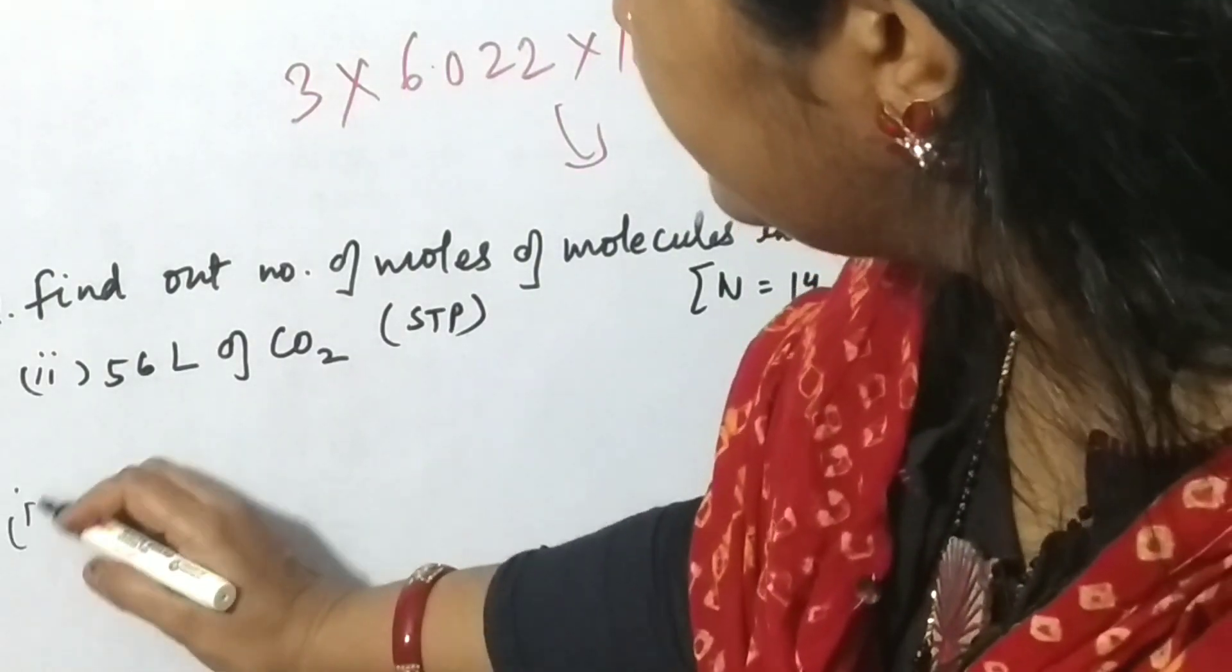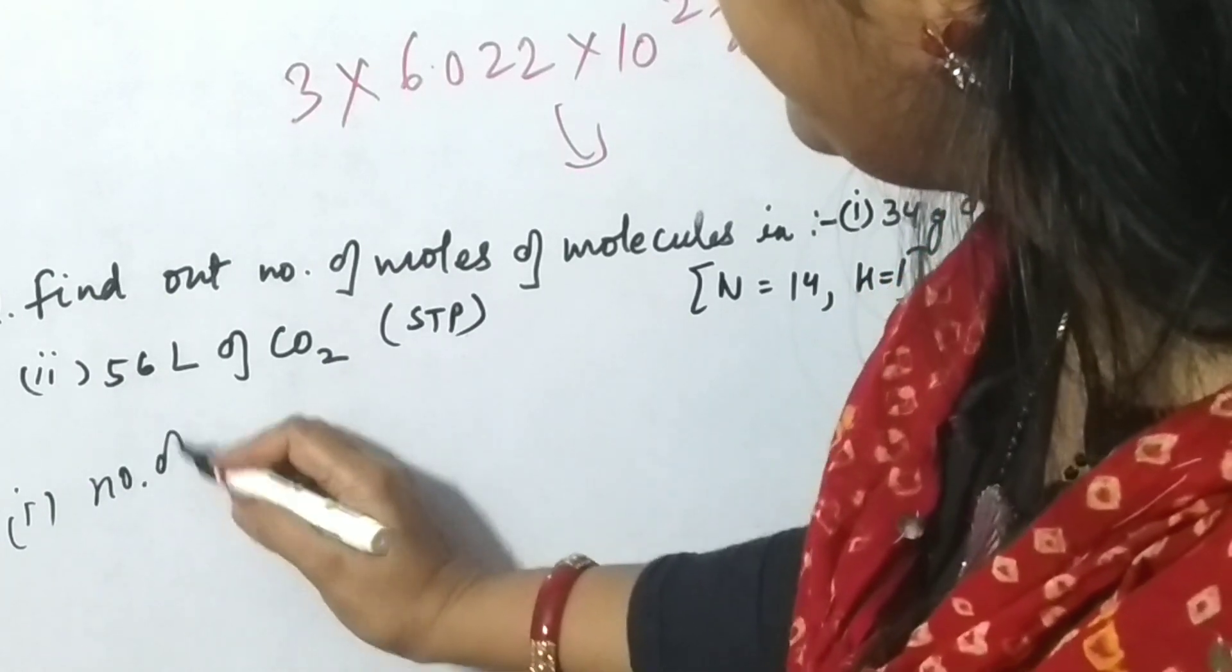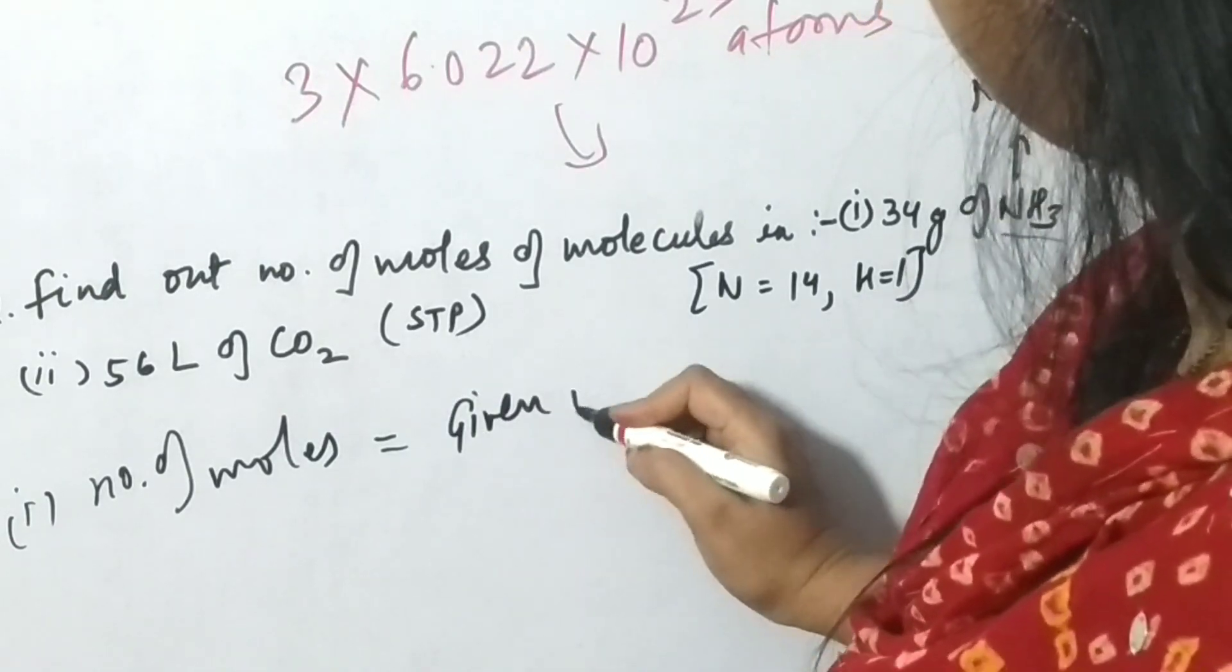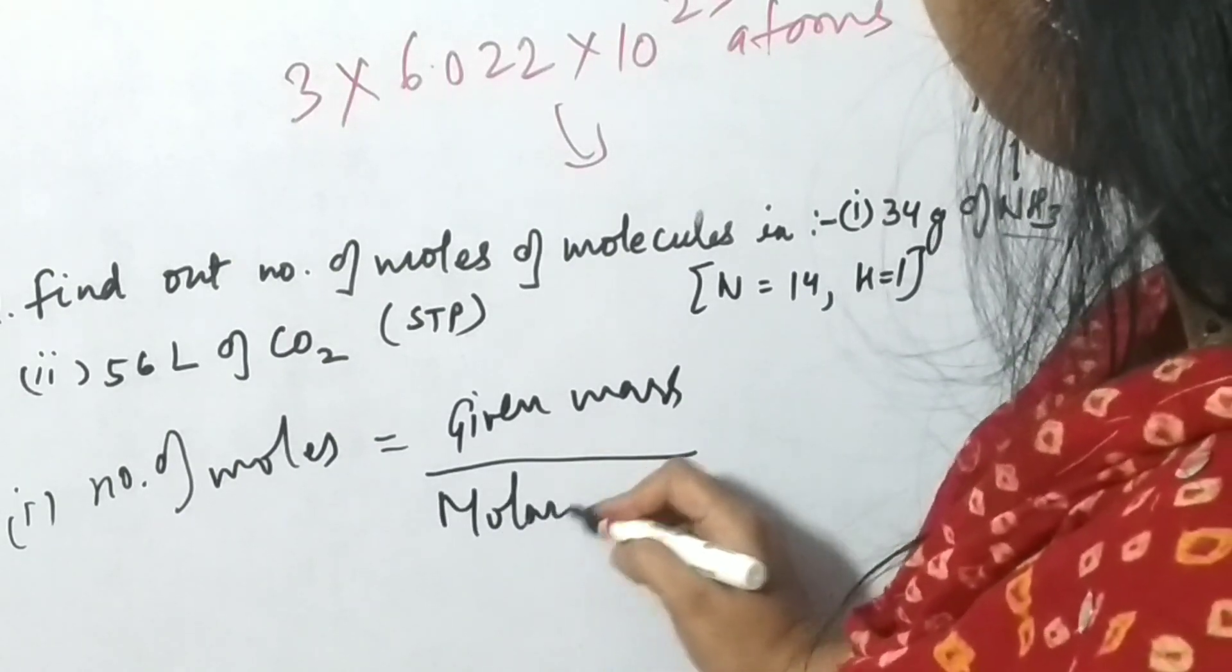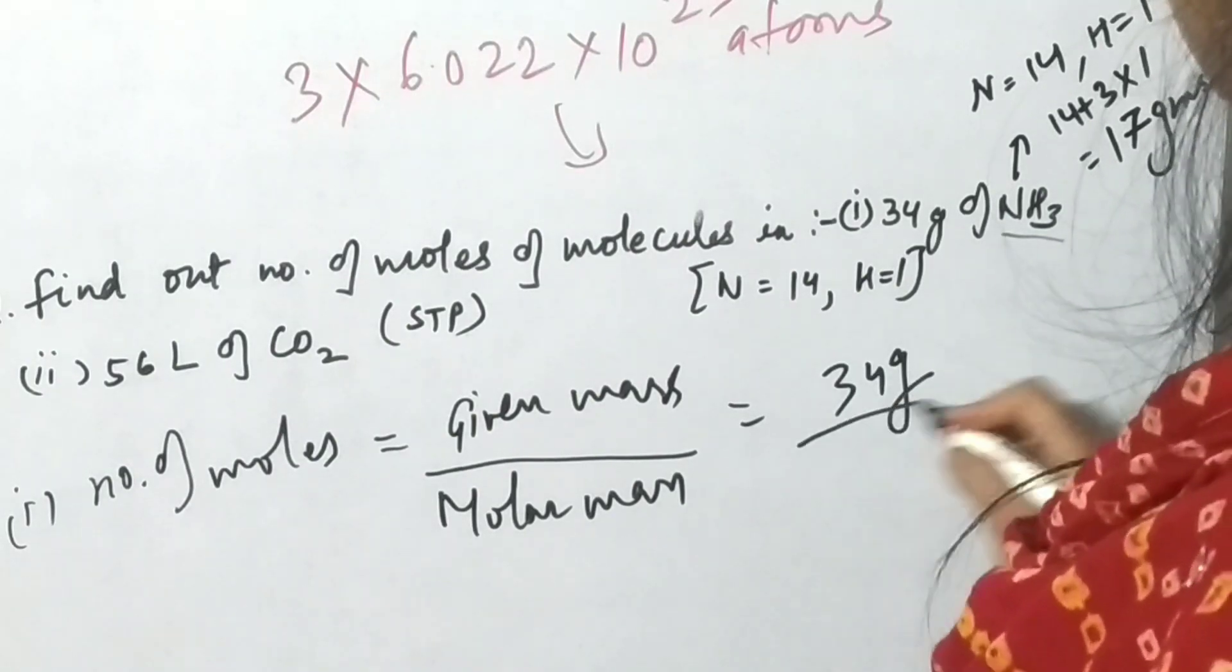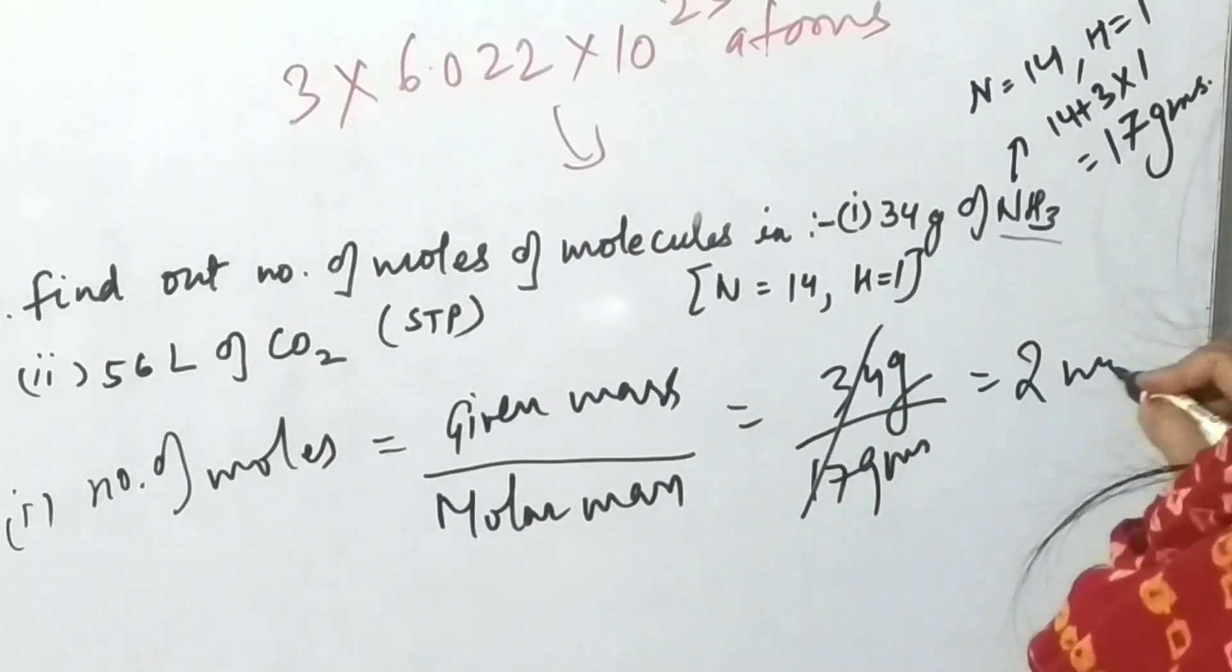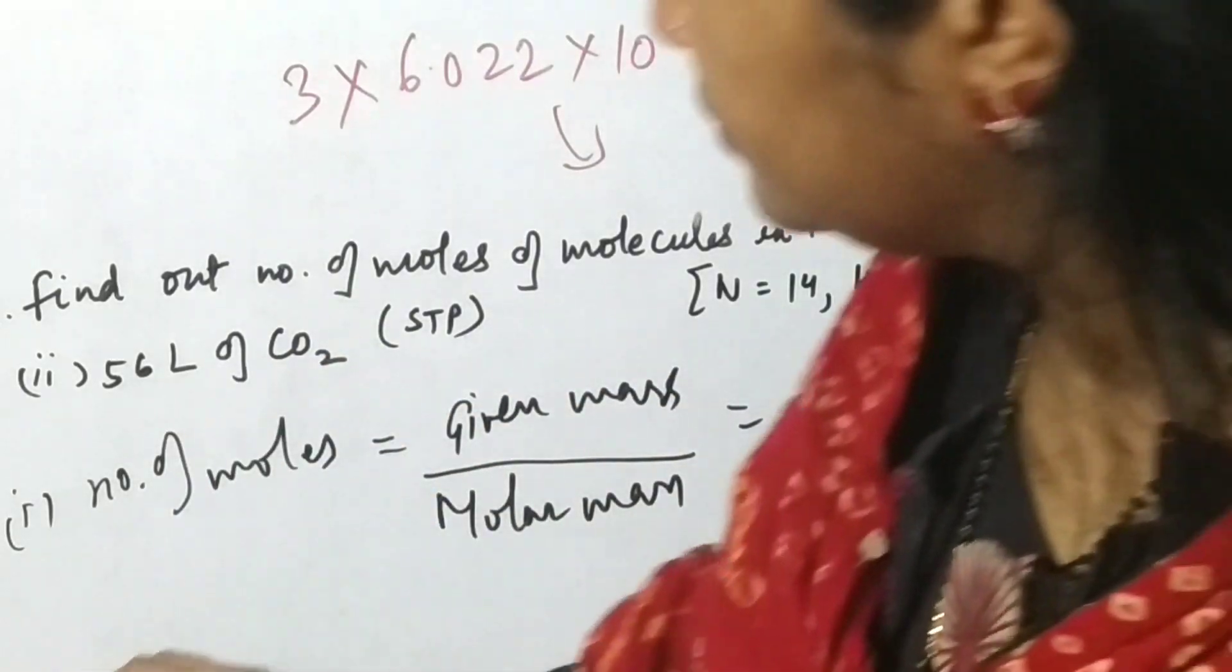So the numerical we will solve: number of moles equals given mass by molar mass. Given mass is 34 grams and molar mass is 17 grams. When you cancel out, it will be 2 moles. So the answer is 2 moles. Now here in the second question there is a difference.